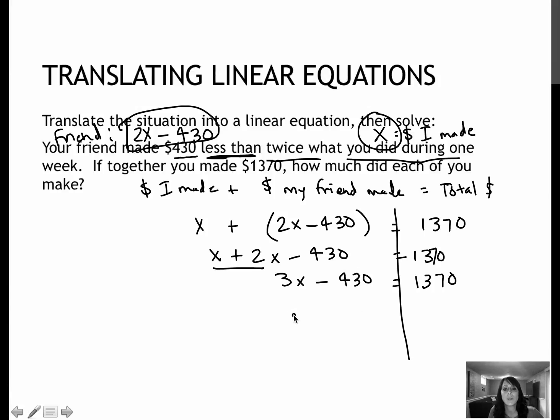Now I'm trying to isolate 3x, so I will add that 430 to get it over to the other side of my equation. That gives me 3x equals 1800. Remember our 0 plus 0 is 0, 7 plus 3 is 10, so I would carry the 1. 1, 3, and 4 is 8, and 1 plus nothing is 1.